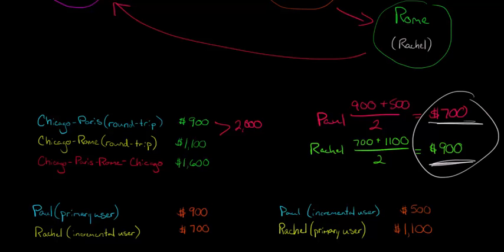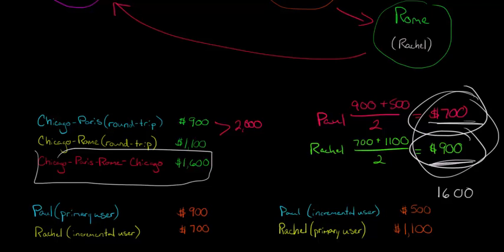Now if we add these up, they add up to $1,600, right? Which is good. That means we didn't make a mistake because the whole cost of this Chicago to Paris to Rome back to Chicago trip is $1,600. So we've allocated the cost. $700 going to Paul, $900 going to Rachel.